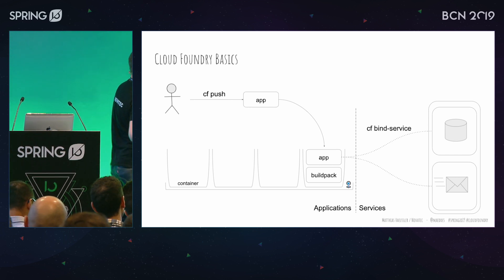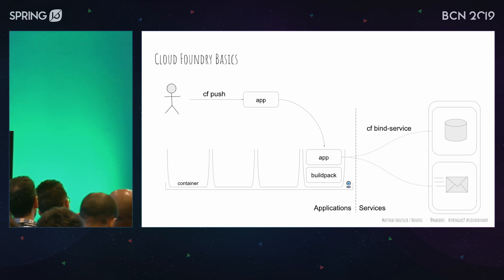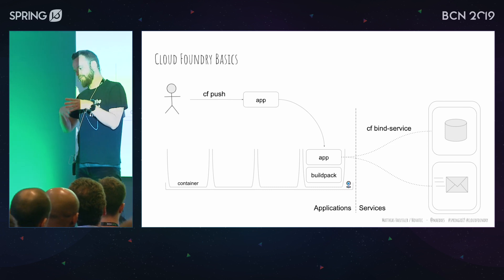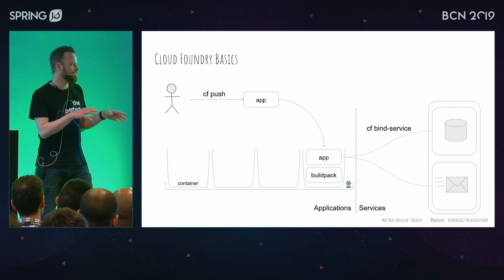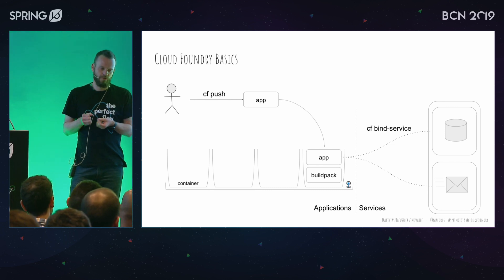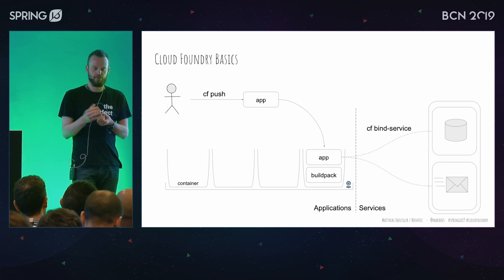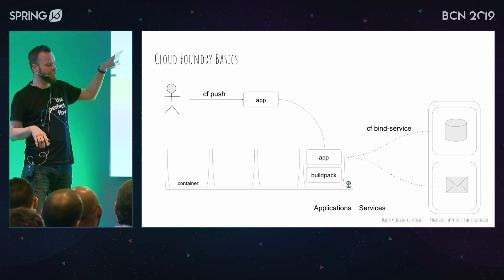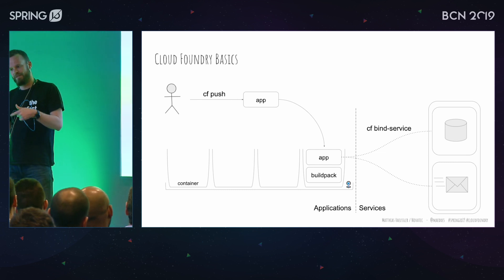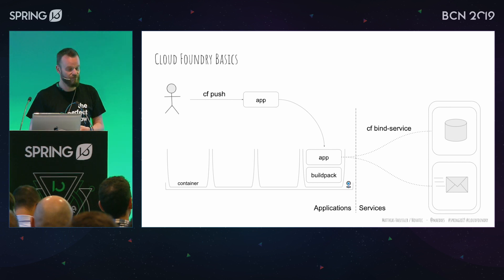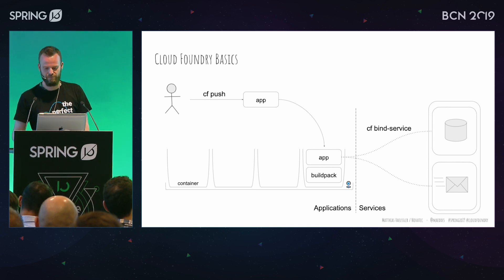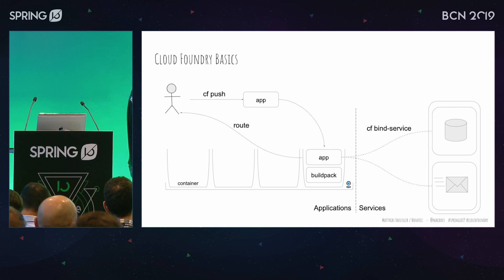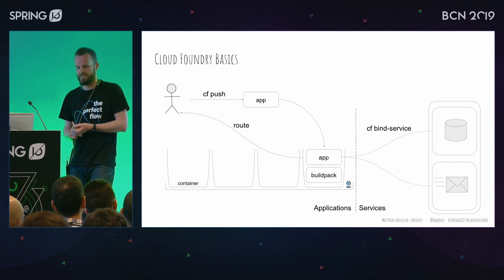To attach a service, there is a command called bind-service. You create your service, call that command, and it will inject the properties — like a JDBC URL or credentials — into the application, so the developer does not have to configure that manually. In the end, the end user gets a route, like a URL, to access the application.